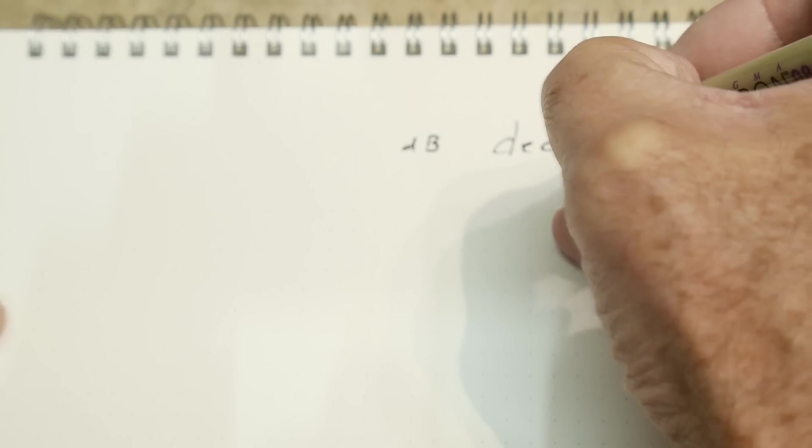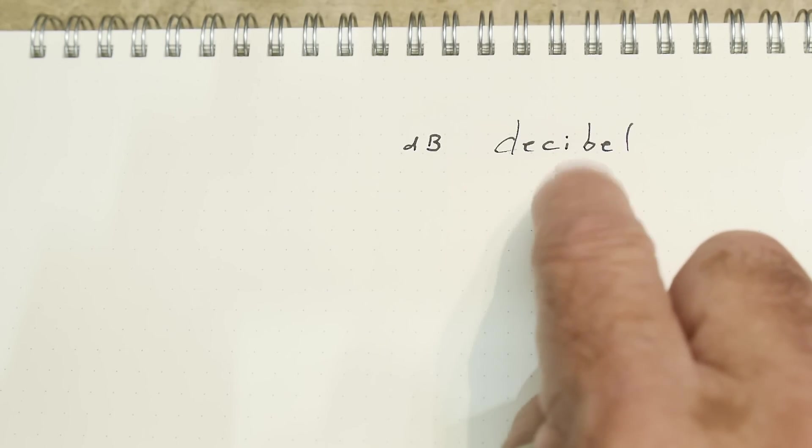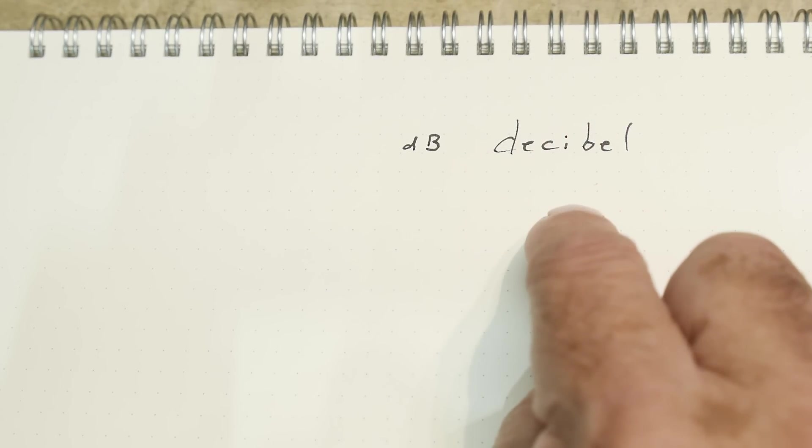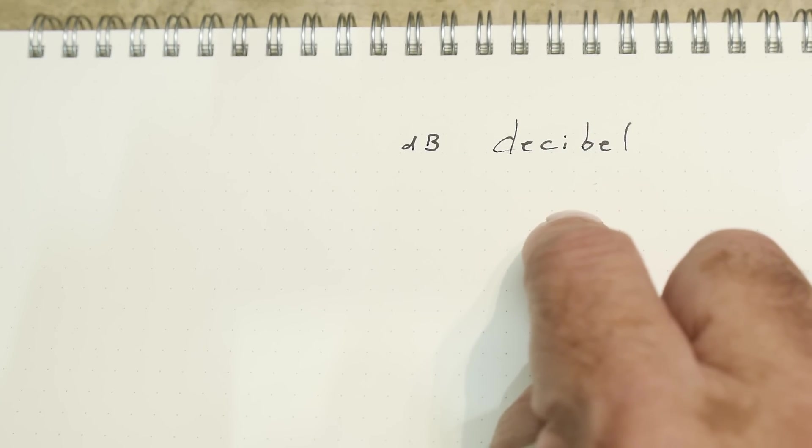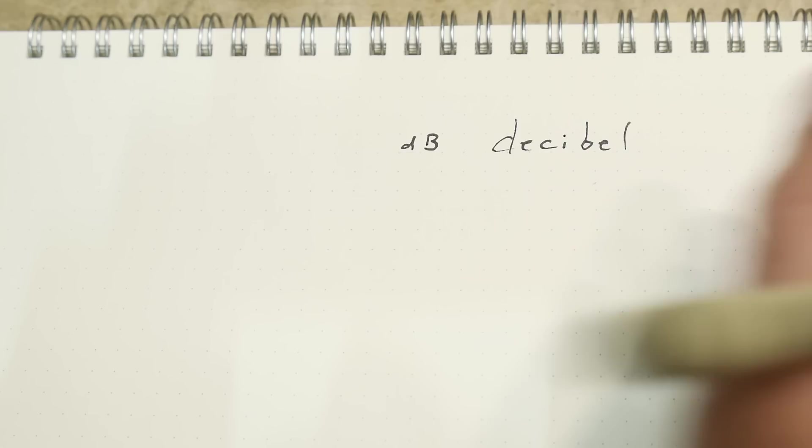Alexander Graham Bell invented the telephone and got his patent in 1876, somewhere back there before 1900.